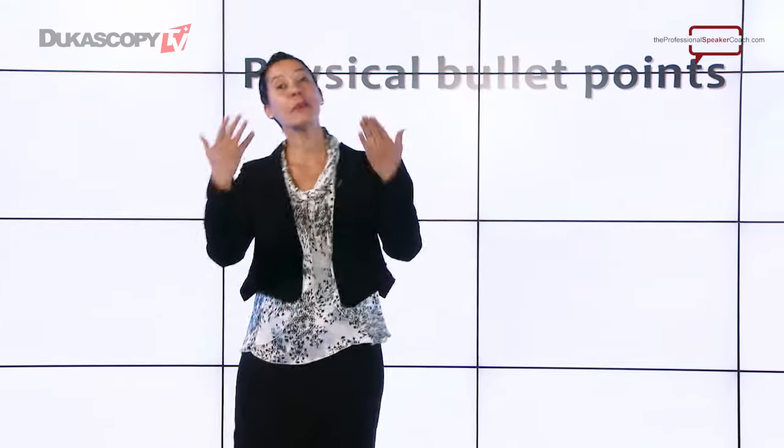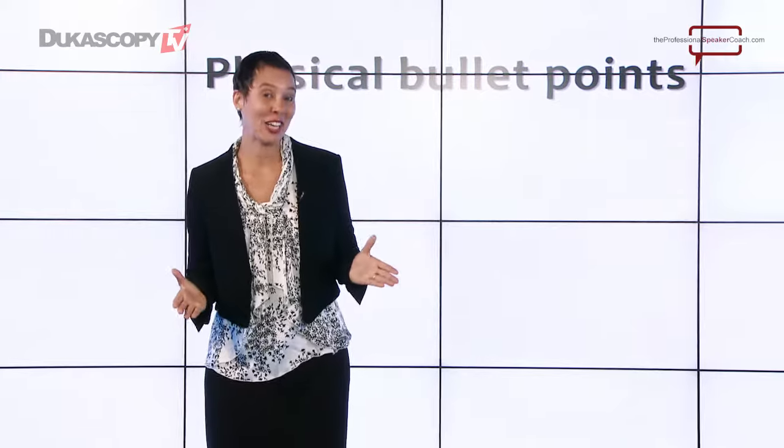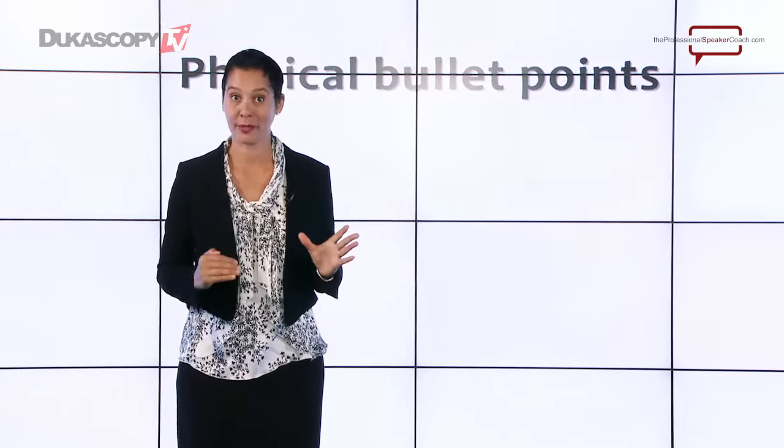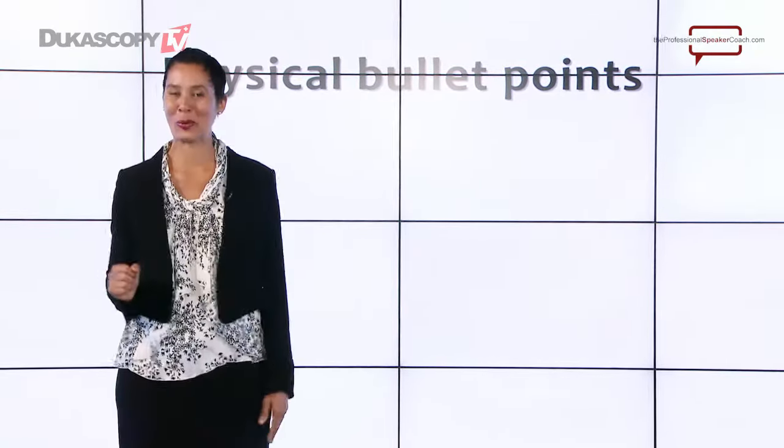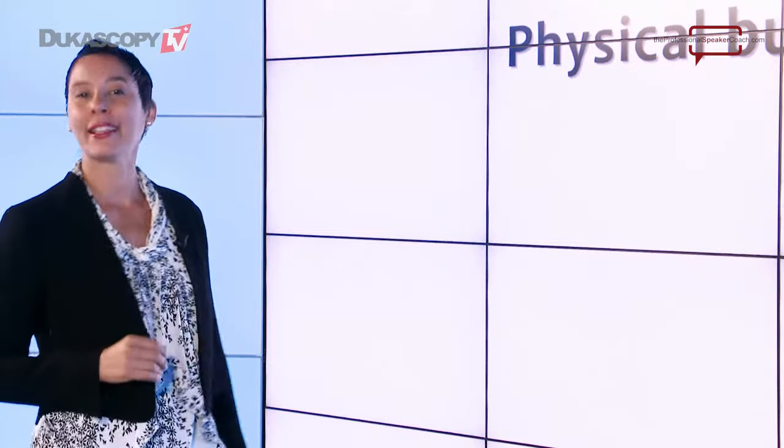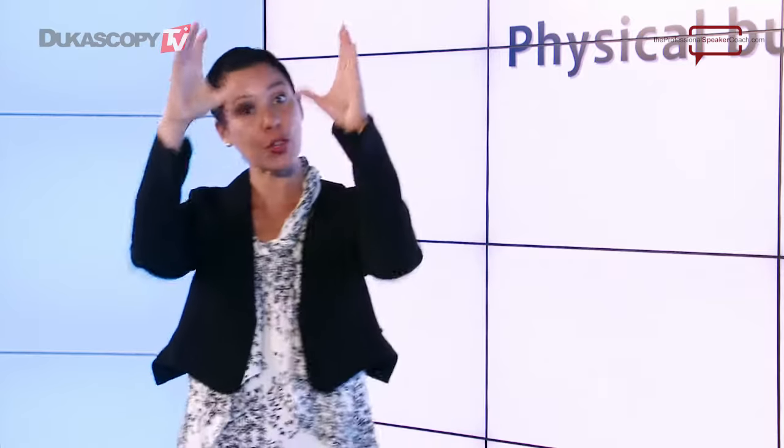A second technique — which is one of my favorites — is to use physical bullet points. This means using your body to convey your bullet points. You are dancing your bullet points. How do you do it? Well, it works something like this. Let's say you have three points. Create a vertical ladder with your hand — vertical ladder up here — point A, point B, point C. See how that goes down really nicely? Those are your bullet points.